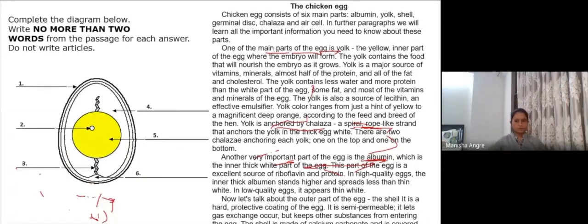Did you get all of them? First is, number five is yolk. That everyone has got, the yellow inner part of the egg. After that we come down to, the yoke is anchored by a chalaza, a spiral rope like strand. So it is anchored by this rope like strand over here. Then we have, there are two chalazae, one is on the top, but then you have to mention that is at number three.